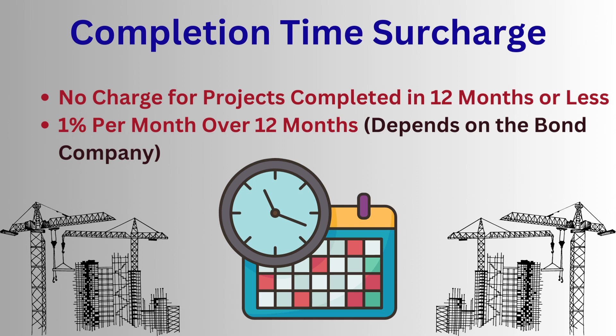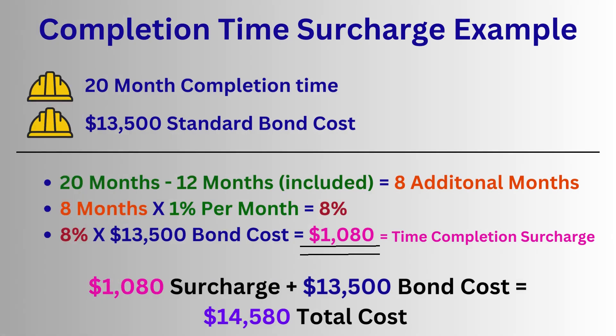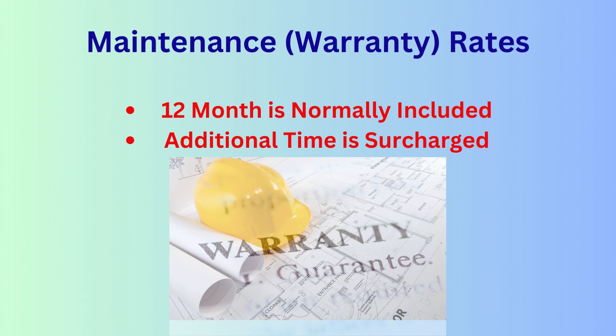Another factor that can impact performance and payment bond cost is completion time. Long-term projects create more risk, so standard rates apply to projects completable in 12 months or less. Projects taking longer are subject to a time completion surcharge, usually 1% per month for each month beyond 12 months. For example, if a project takes 20 months, subtract 12 to get 8 extra months; 8 months times 1% equals 8%. Applying 8% to our $13,500 premium gives a surcharge of $1,080, for a total bond cost of $14,580.